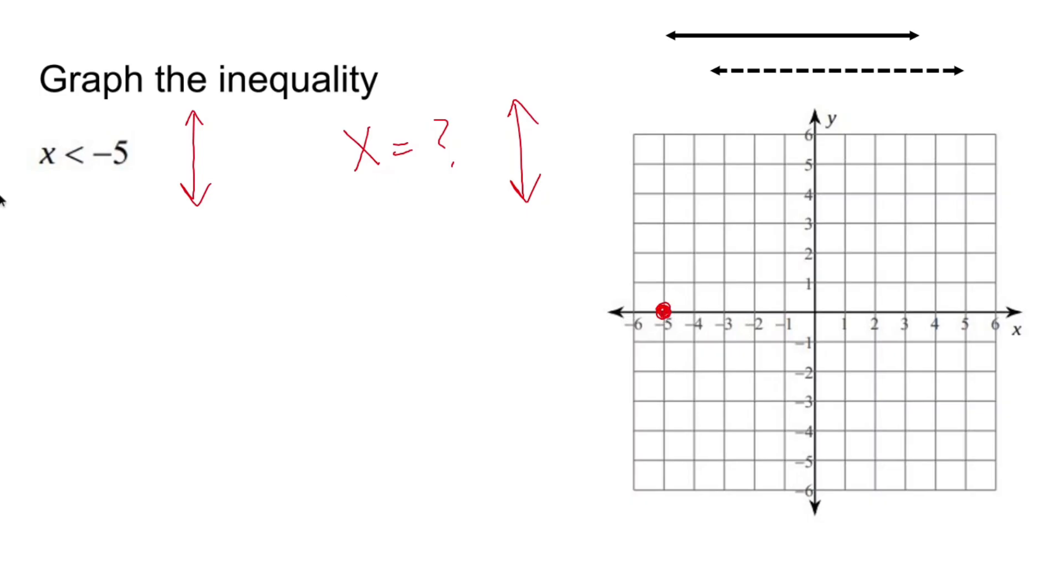Now, this is where we have to be careful. Look at the symbol. The symbol is less than. It's not less than or equal to. So when we graph an inequality that is either less than or greater than, you graph a dashed line.